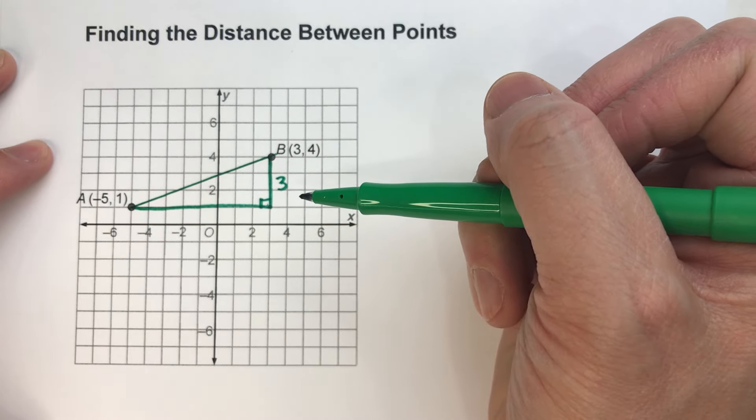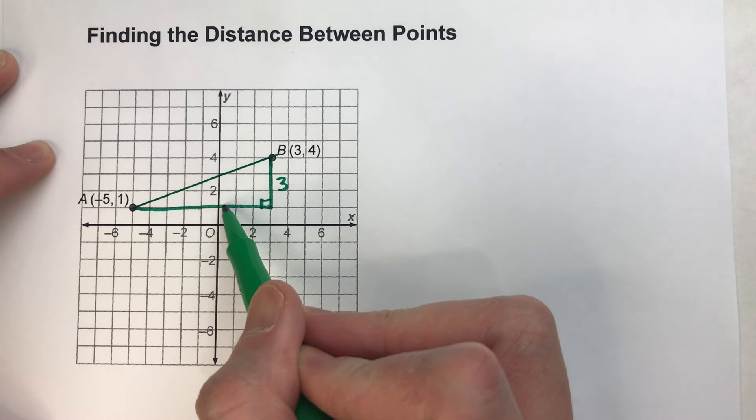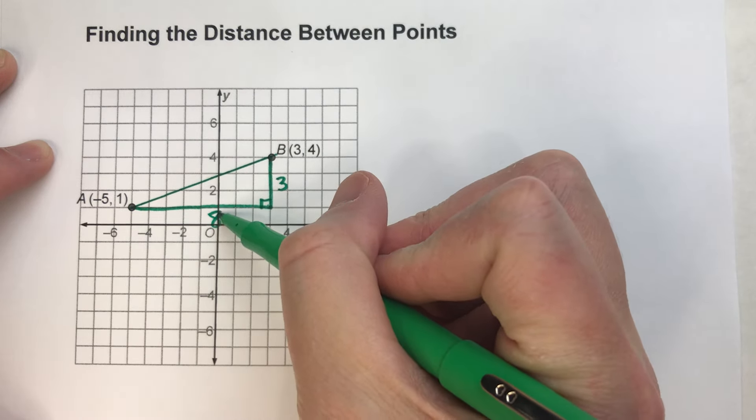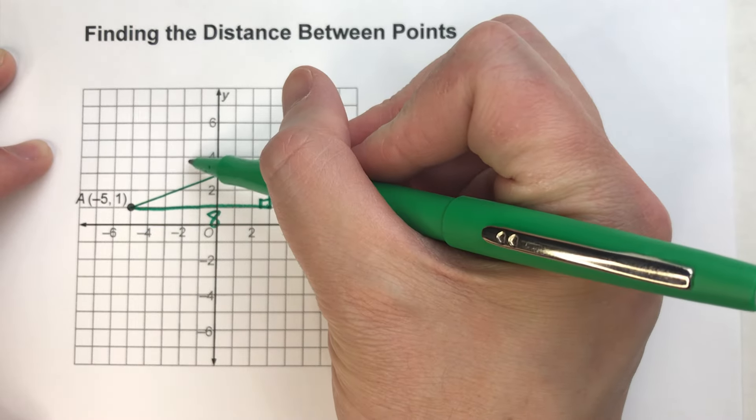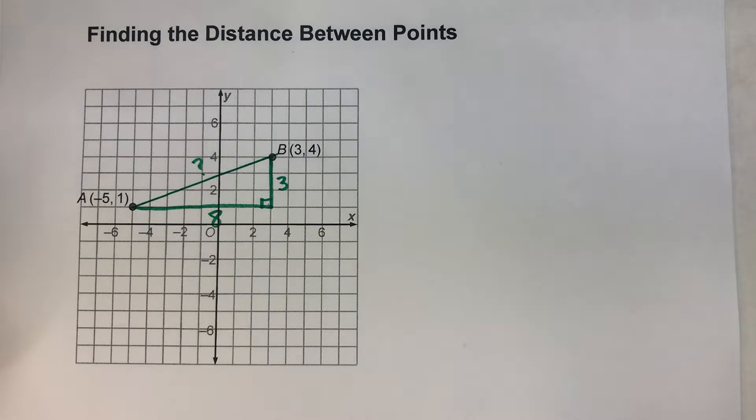The other leg of the triangle is 1, 2, 3, 4, 5, 6, 7, 8. And I'm trying to find this length right here. It's the hypotenuse of a right triangle. So if I want to find that distance,